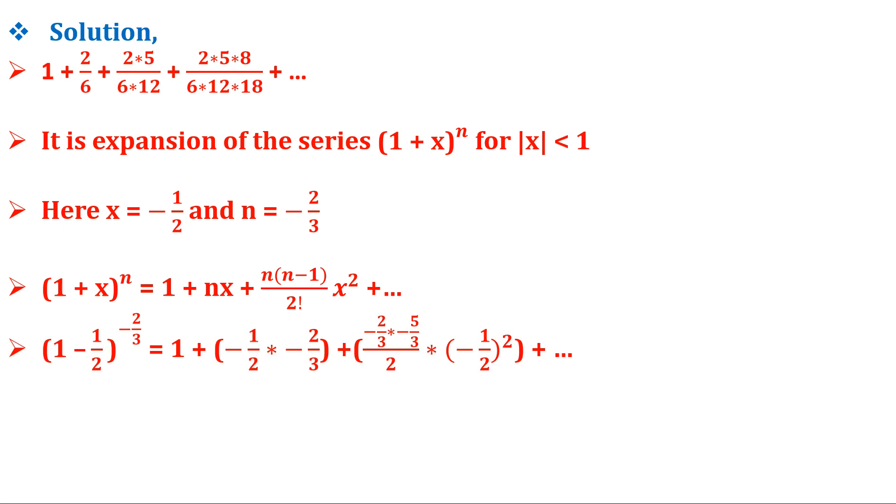(1 minus 1 by 2) raised to minus 2 by 3 equals to 1 plus minus 1 by 2 into minus 2 by 3, that is 2 by 6, plus minus 2 by 3 into minus 5 by 3 divided by 2 into (minus 1 by 2) whole square.